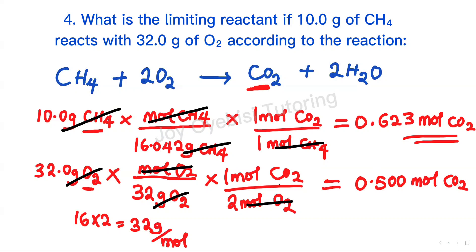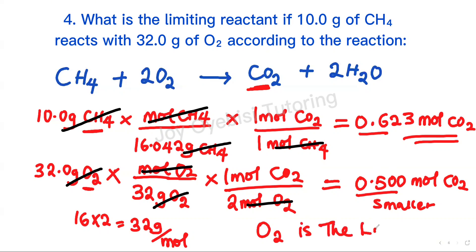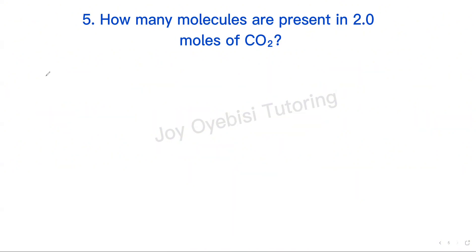The reactant that gives us the smaller number of moles of product is the limiting reactant. Since 0.5 is smaller than 0.623, oxygen is the limiting reactant. The 32 grams of oxygen give us the smaller moles of CO2, which means it is the limiting reactant, while CH4, which gives the higher moles, becomes the excess reactant.